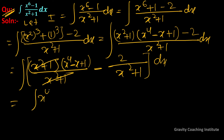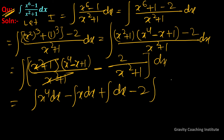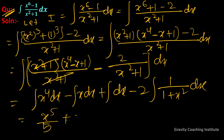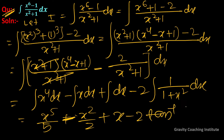So we get: integration x to the power 4 dx minus integration x dx plus integration dx minus 2 into integration 1 upon (1 plus x square) dx. This equals x to the power 5 upon 5, minus x square upon 2, plus x, minus 2 tan inverse x, plus C. So this is our required answer.